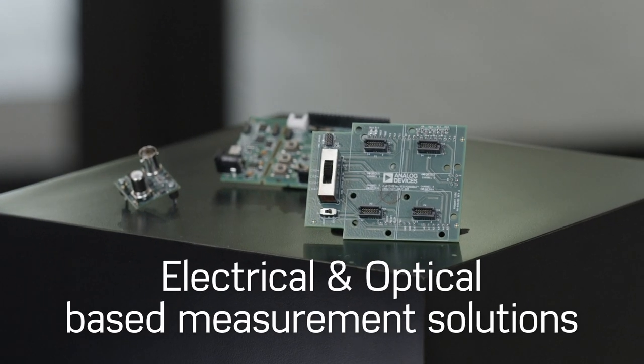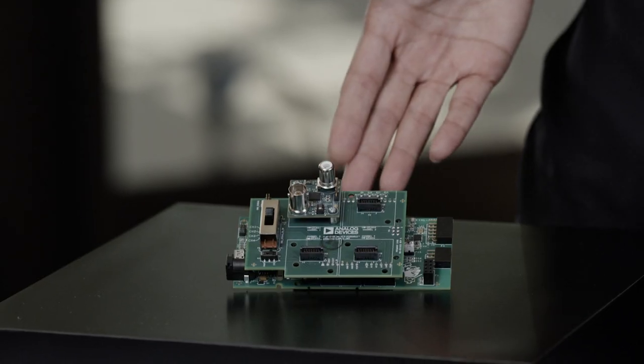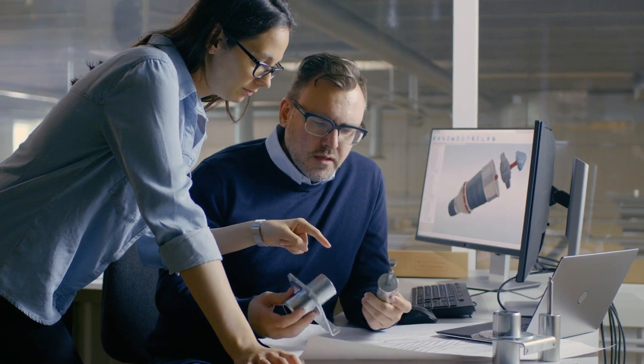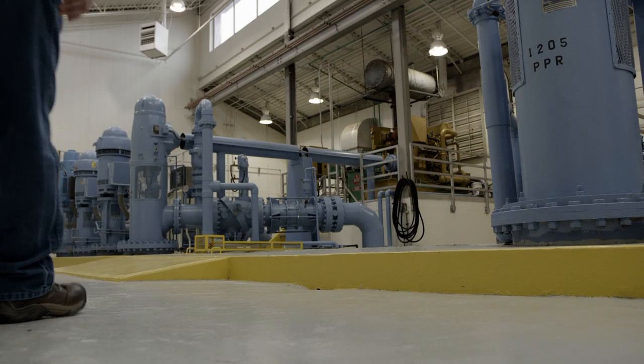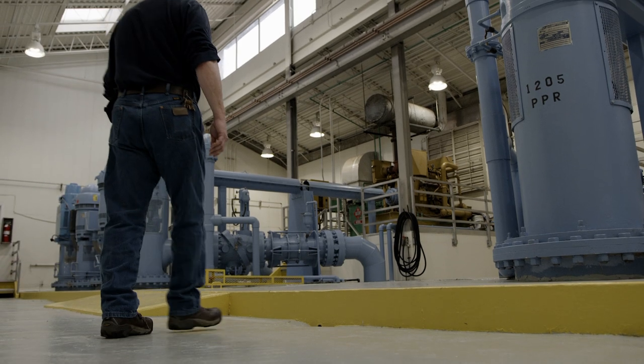Analog Devices offers a wide variety of both electrical and optical-based measurement solutions that are designed specifically for water quality monitoring applications. With hardware, software, and in some instances, the mechanical enclosures, you'll be able to quickly start developing a water quality monitoring solution that works for your application.